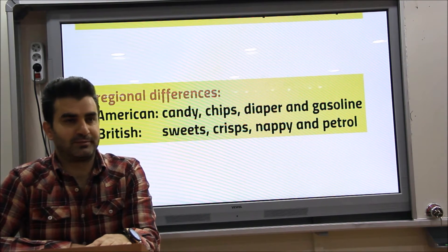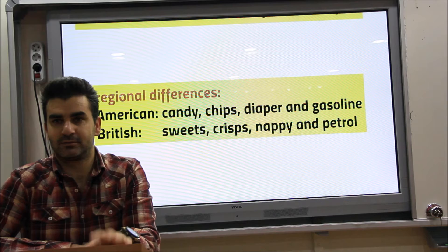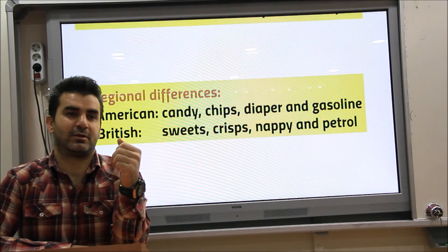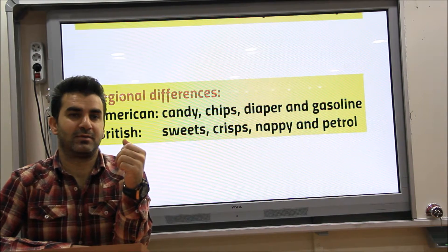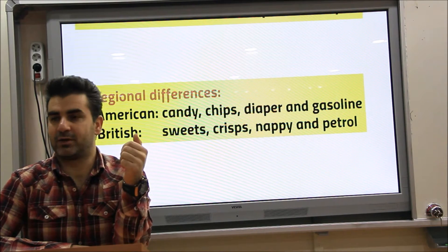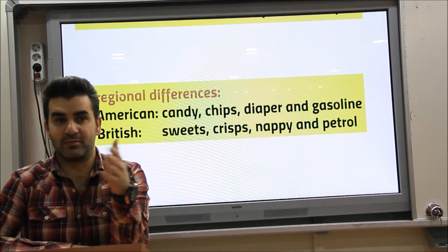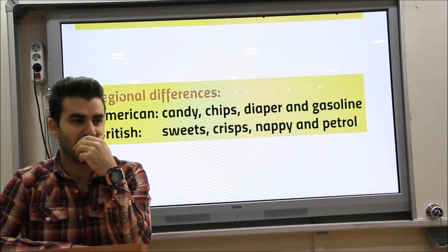Any other examples? 'Gevrek' and 'simit'. In İzmir it is 'gevrek', in Diyarbakır it is 'simit'. We can draw from that example.